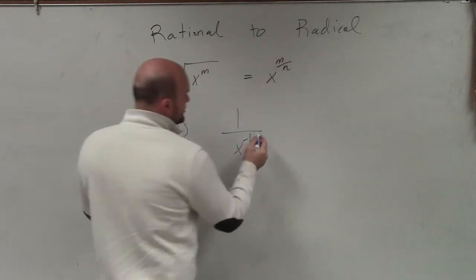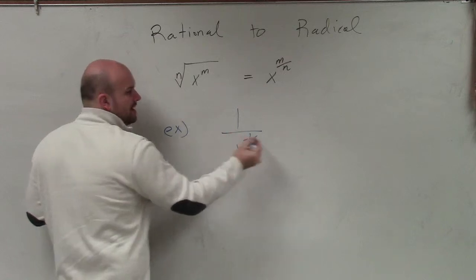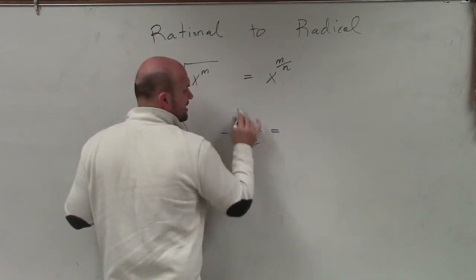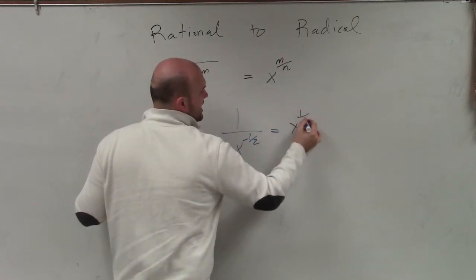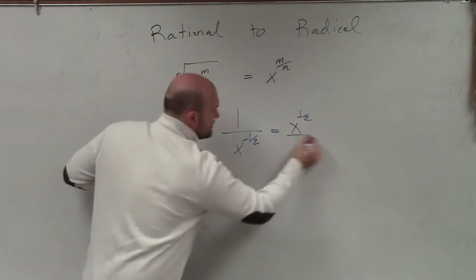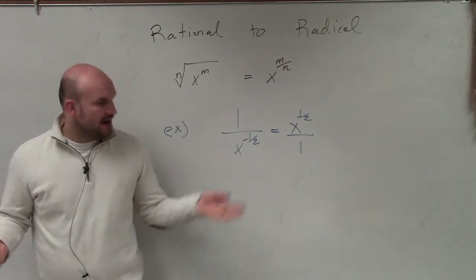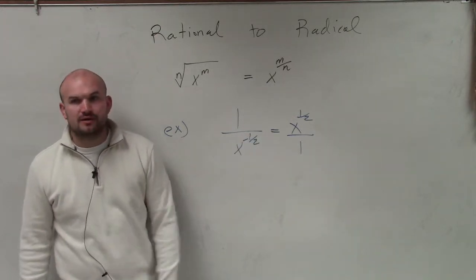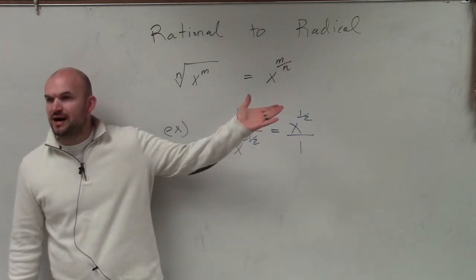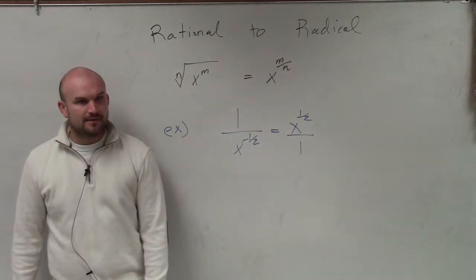So the first thing I would do with this is I would make this power positive. I would rewrite this in the numerator as just x to the 1/2 power. If you have a negative power in the denominator, to rewrite it positive, you put it in the numerator. If it's negative in the numerator, to write it positive, you put it in the denominator.